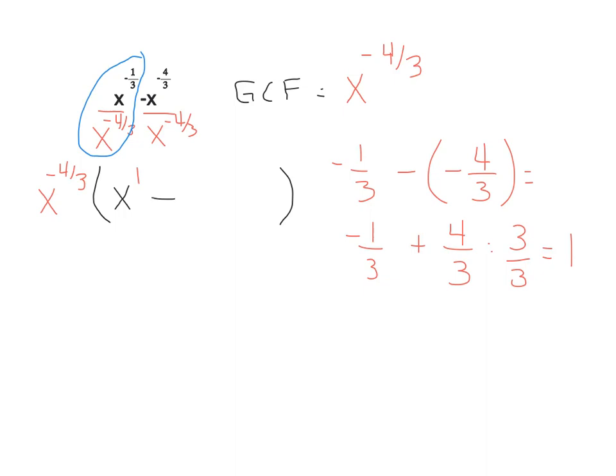Minus, then we'll turn our attention to this second expression. In this one, we're going to have x, and we'll do the exponent the same way. Negative four-thirds minus negative four-thirds. And in calculating this, this is negative four-thirds plus positive four-thirds, which adds to zero.